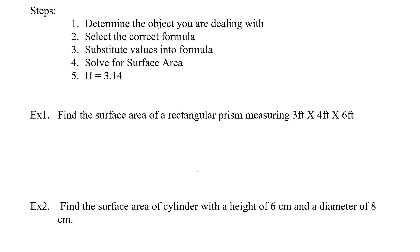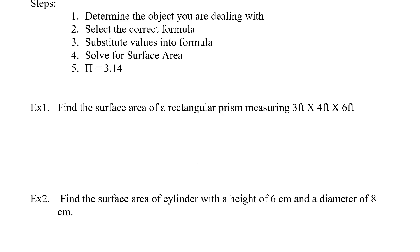Our first step is to determine the object you are dealing with — just figure out what the shape looks like. Then select the correct formula, substitute values into the formula, and solve for surface area. Our pi is going to be equal to 3.14.